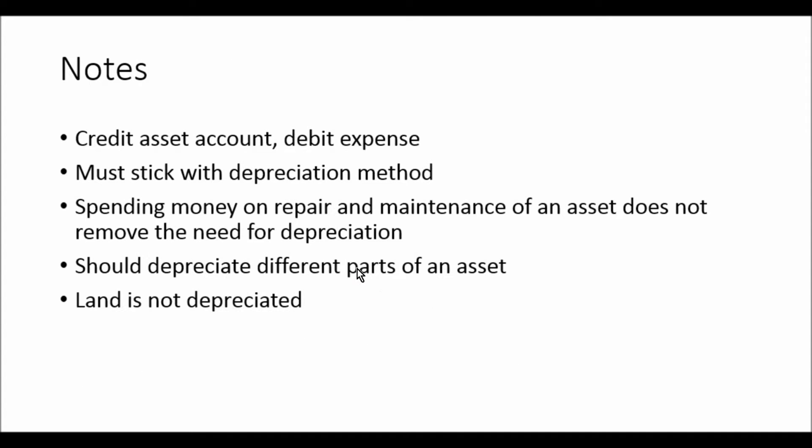Some notes: you credit the asset account. If you know your debits and credits — assets are a debit entry, so to bring that amount down you would credit. Expenses are debit, so that's the double entry. Generally you wouldn't credit the asset account directly — you'd actually credit an asset depreciation account, a separate T-account for asset depreciation.